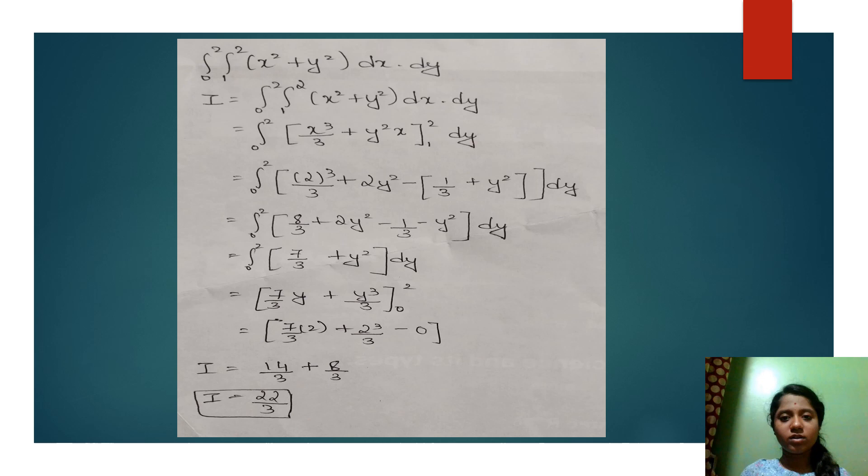Here is a small sum that you can understand easily if you concentrate. The question is integral 0 to 2, integral 1 to 2, x square plus y square dx dy. The first step is to integrate x square plus y square with respect to dx.